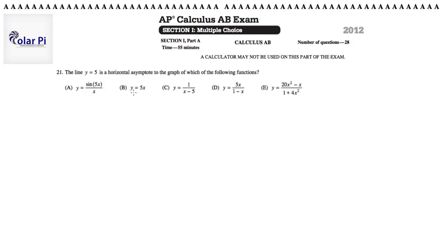the line y equals 5 is a horizontal asymptote to the graph of which of the following functions. Okay, so, I'm going to skip a for a second, okay? But let's go to b.